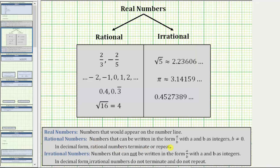On the other hand, irrational numbers are numbers that cannot be written in the form of a over b, with a and b as integers. In decimal form, irrational numbers do not terminate and do not repeat.